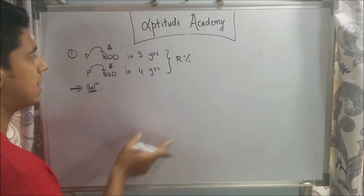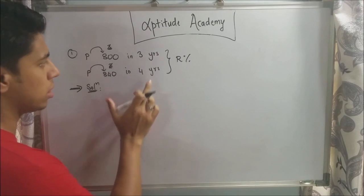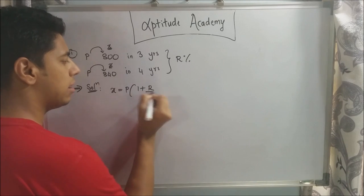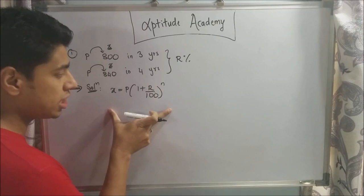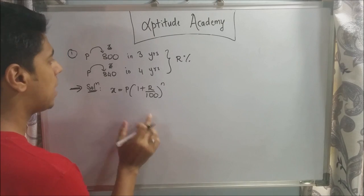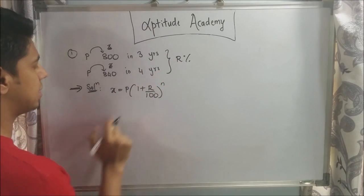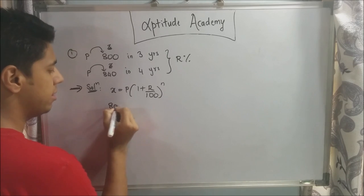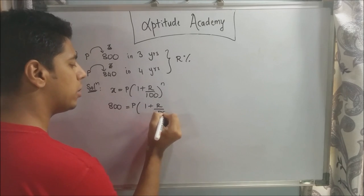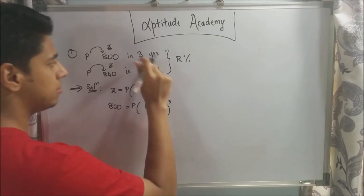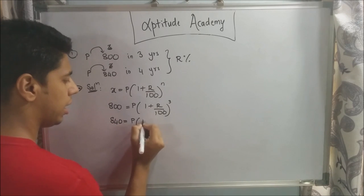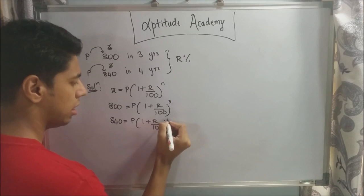For the first sum, an amount P becomes Rs. 800 in 3 years and the same amount P becomes Rs. 840 in 4 years. We know the equation for compound interest: X = P × (1 + R/100)^N. We write the same equation for each case: 800 = P × (1 + R/100)^3, and 840 = P × (1 + R/100)^4.